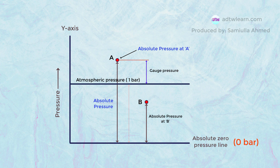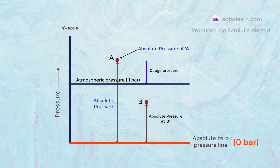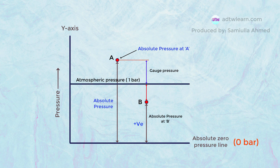Let us take another example — consider point B. When we measure the value of pressure from the absolute pressure line, this value will be positive, and it is called absolute pressure at point B. But if we measure the value of pressure at point B from the atmospheric pressure line, this value will be negative, and it will be called vacuum pressure.